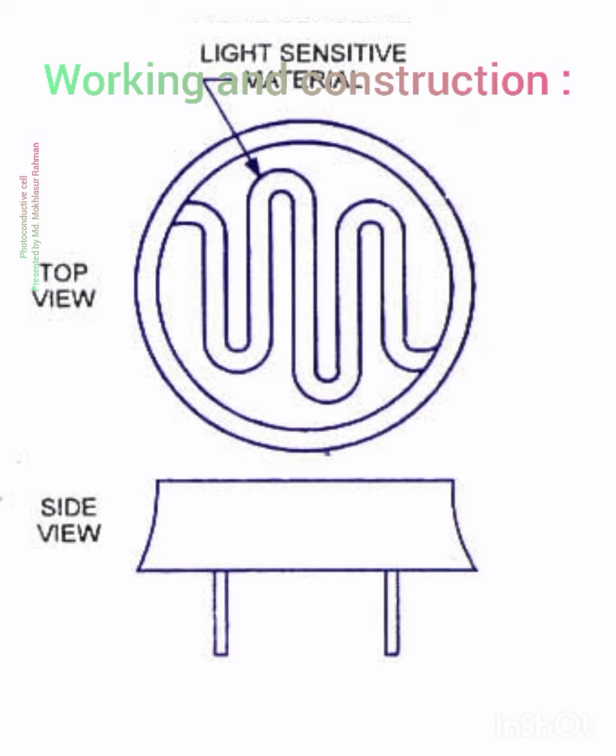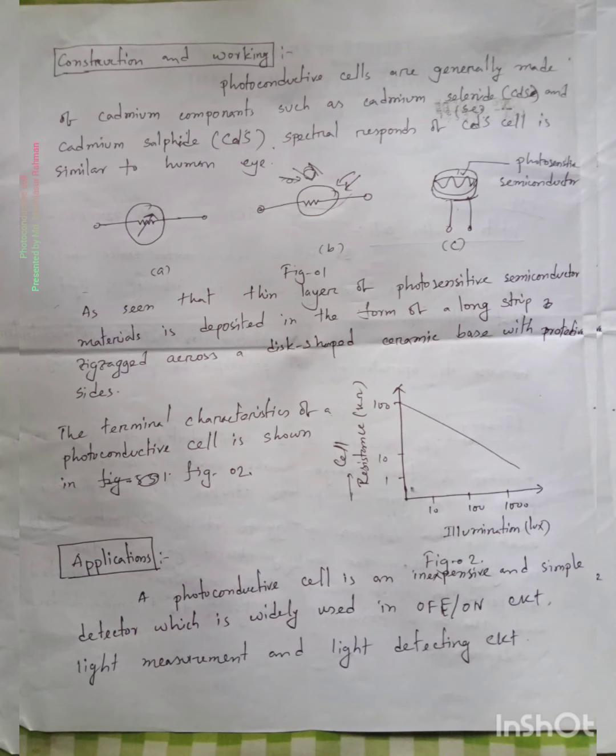The spectral response of cadmium sulfide cell is similar to the human eye. The resistance of the sensor varies with light intensity - in bright light the resistance is lower, and in darkness the resistance is higher.